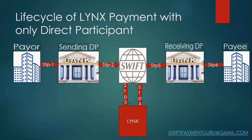There can also be a payment scenario where the payer doesn't have an account with a sending direct participant. In that case, the payer holds an account with an indirect participant or non-participant of LYNX, and that non-participant would need to have a relationship with a sending direct participant so they can help facilitate the transfer to the payee. We'll discuss that in the next session.